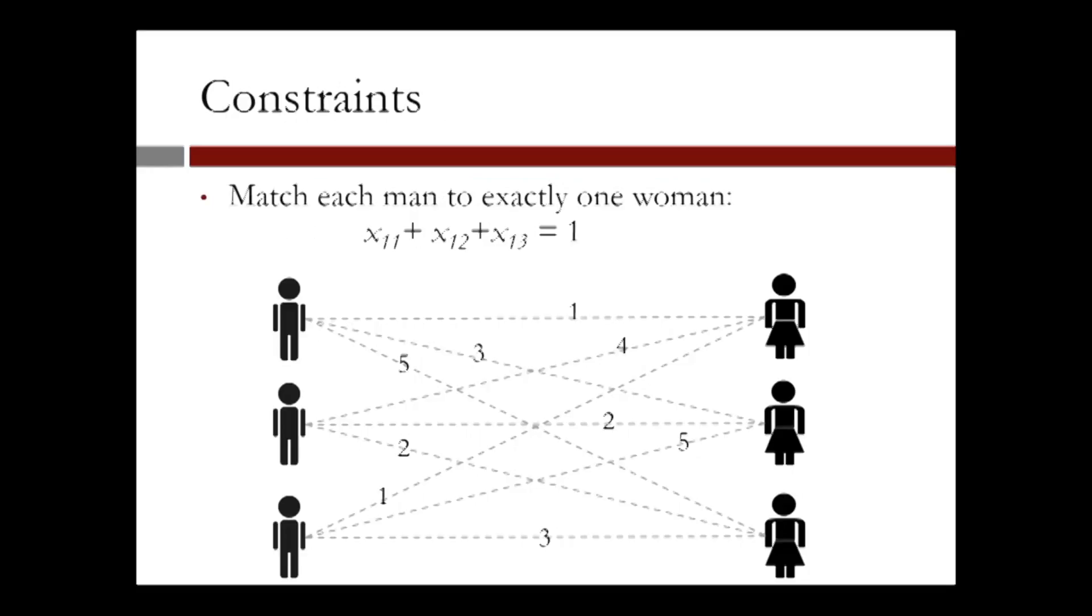We next define the constraints for the decision variables xij. Each man, say man one, should match to exactly one woman, and we represent this by the mathematical constraint as follows: x11 plus x12 plus x13 is equal to 1.